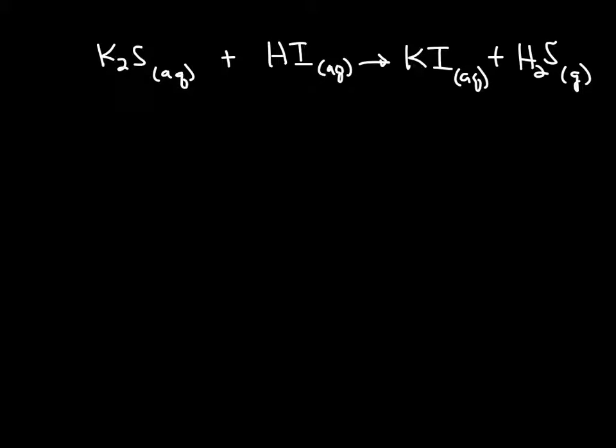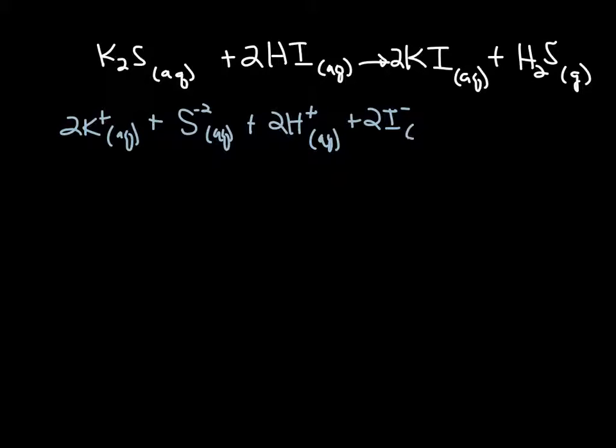So let's balance this equation so that we can account for the fact that we need 2 hydrogens, and we end up, or started with 2 potassiums. So there's our complete molecular. Our complete ionic, we'd have 2 potassium ions, so everything's going to ionize, and a sulfide ion, and 2 hydrogen ions, and 2 iodide ions, resulting in 2 potassium ions, plus 2 iodide ions, plus our H2S gas, which of course is our driving force.